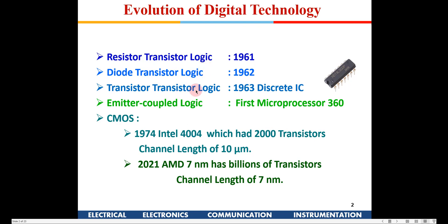In 1961, the first digital logic implemented was known as resistor transistor logic, in which the digital logics were using discrete components — not in an IC. A separate resistor and a separate transistor were used on a PCB to realize that resistor transistor logic.